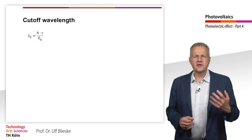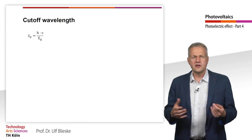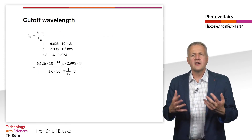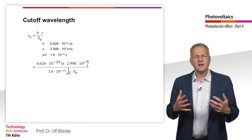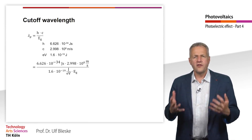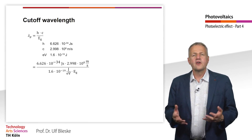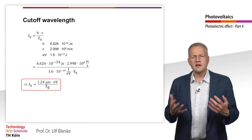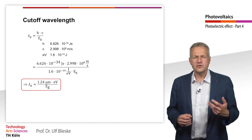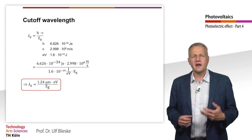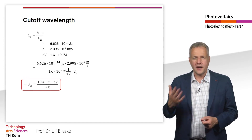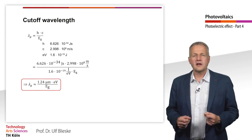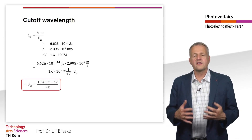If we substitute the values and units for Planck's quantum of action, the speed of light, and the elementary charge into the formula for the cut-off wavelength, we get the following expression: the cut-off wavelength is 1.24 µm·eV divided by the band gap. With this formula, you can calculate the cut-off wavelength quite easily.